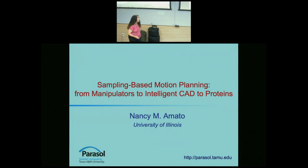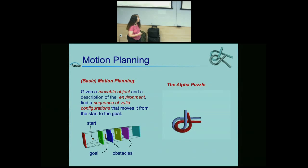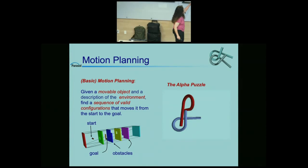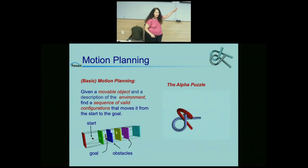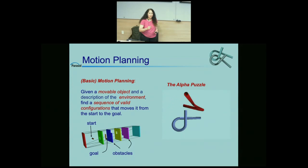Let me start by describing what is motion planning and what we mean by it. In the most general sense, you have a movable object — in this example on the left, the movable object is just a stick — and you want to move it from one area to another in that environment while avoiding collision with the walls. The job of the motion planner is to determine the sequence of valid configurations to take it from the start to the goal configuration.